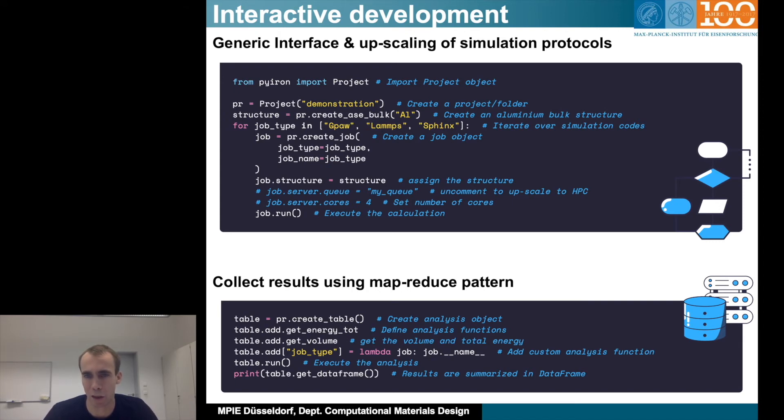The next step is really collecting the data. With this workflow, you can really spawn a lot of calculations. Many people have already reached their quota. The important part is, what can we do with this data? And Pyron follows basically the MapReduce pattern. So we have the Pyron table object. You can create it from the project object, create this table. To the table, you assign functions which take a job as an input and then create some output from this object.